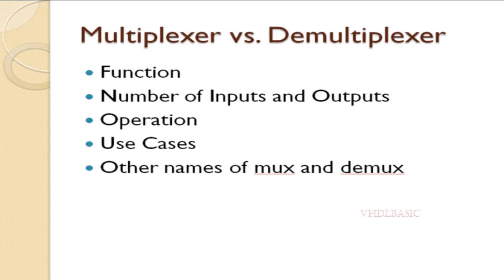In a MUX, the control input determines which one of the input signals is passed through to the output. In the case of a demultiplexer, the control input determines which one of the output channels will receive the input signal.